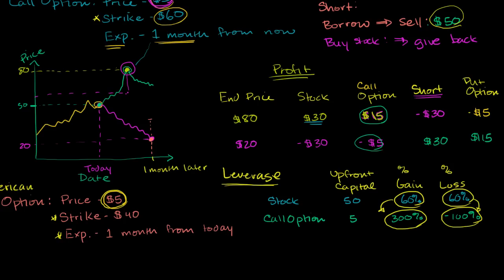Let's think about how put options can give us leverage on a downside, or I should say, on a bet that the stock will go down relative to shorting. And this one's a little bit more complicated because shorting is a little bit less intuitive.